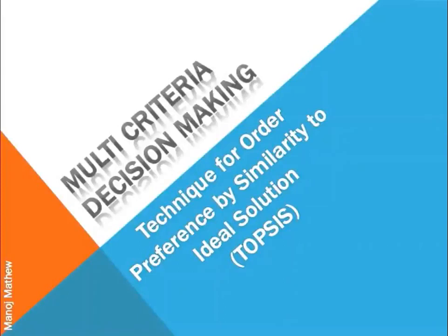Hello all. Today we will look at a very well-known and commonly used method called TOPSIS. This method is based on the concept that the best alternative should have the shortest Euclidean distance from the ideal solution. The full form of TOPSIS is Technique for Ordered Preference by Similarity to Ideal Solution.